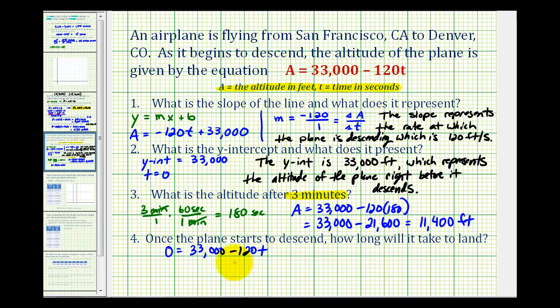So we'll add 120T to both sides. So we have 120T equals 33,000. Let's go ahead and finish it over here. So we'll divide both sides by 120. So we'll have T equals this quotient. And 33,000 divided by 120 is equal to 275. And this would be seconds.